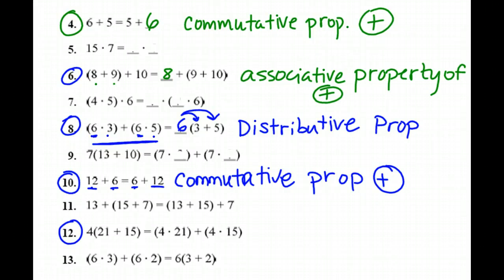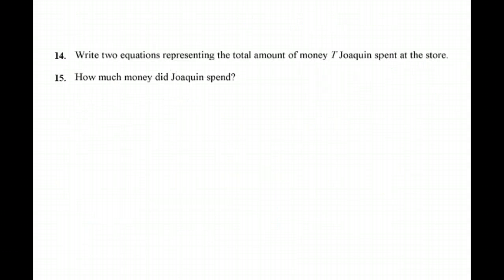Okay, number 12. All right, number 12. They want us to state the property. So again, it is distributive. We distribute that 4 to the 21 and the 15. Think of handing something out. I'm distributing the 4. I'm making it even. I want to give the 4 to the 21 and I want to give the 4 to the 15. So we know that that, again, is distributive property. Okay, so for number 14, we're using the problem solving. And for some reason, the question didn't pop up. So I'm going to read the question for you right now. It says, Joaquin went to a yard sale on Saturday. He bought 6 pairs of jeans for $2 each and 4 sweaters, also for $2 each. So write 2 equations representing the total number of money, T, Joaquin spent at the store.